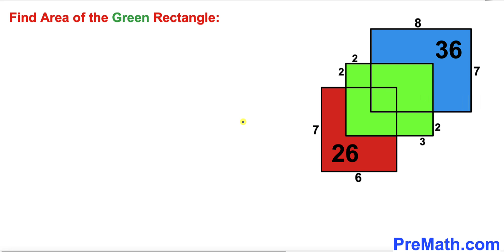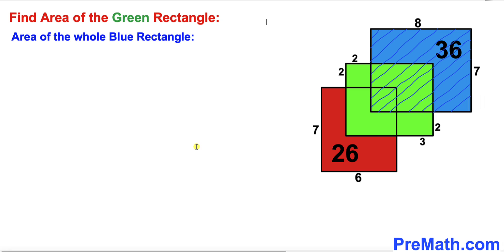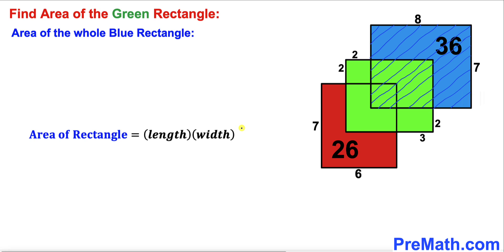Let's focus on this blue rectangle and calculate the area of the whole blue rectangle. Using the formula area equals length times width, our length is 8 and the width is 7, so the area of this blue rectangle is 7 times 8, which equals 56 square units.